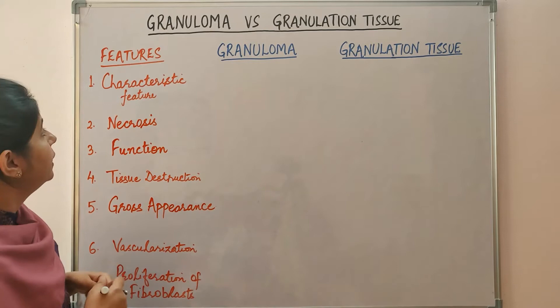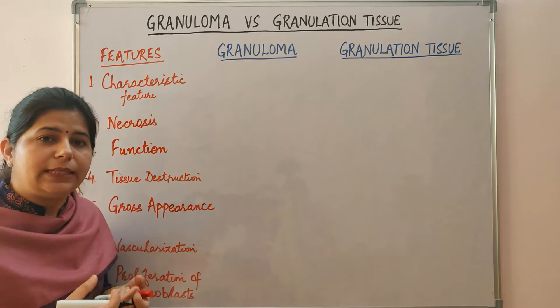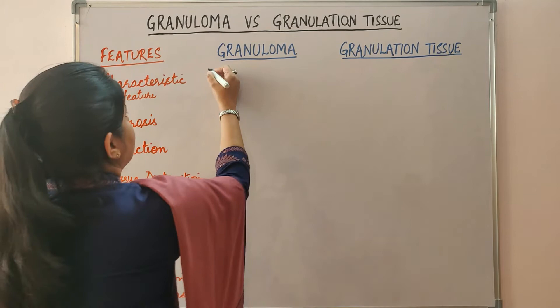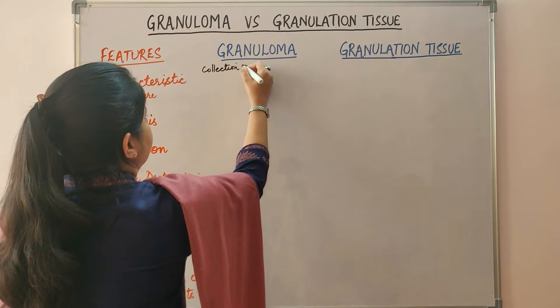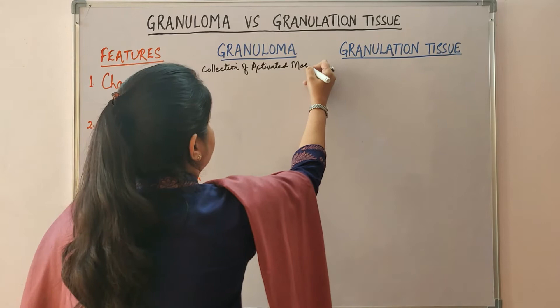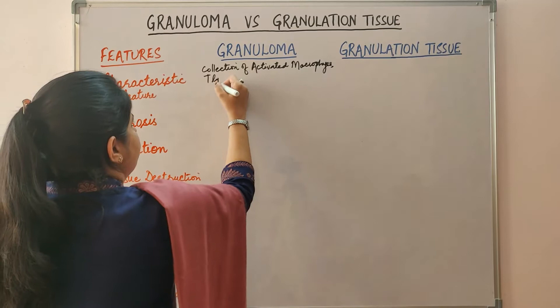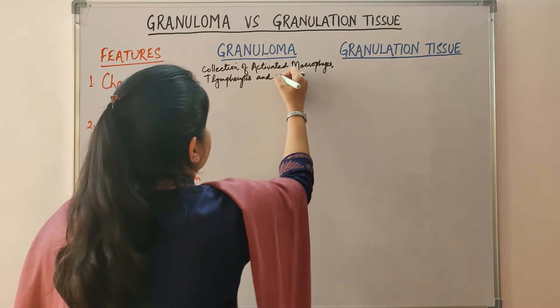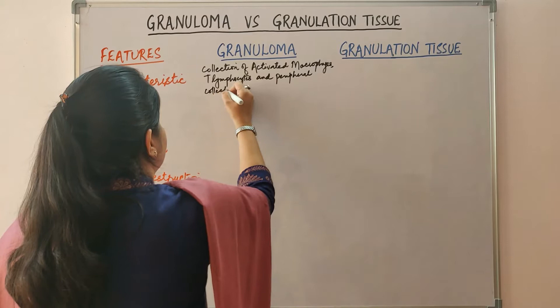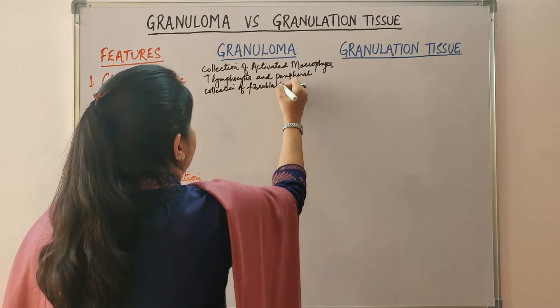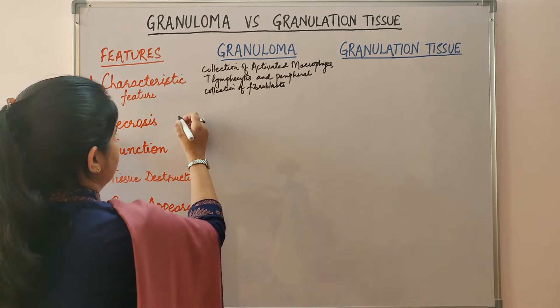Coming on to granuloma — the characteristic feature. Granuloma is seen in a form of chronic inflammation which is granulomatous inflammation, and this is characterized by collection of activated macrophages and often T lymphocytes, and peripheral collection of fibroblasts. They may be associated with necrosis.